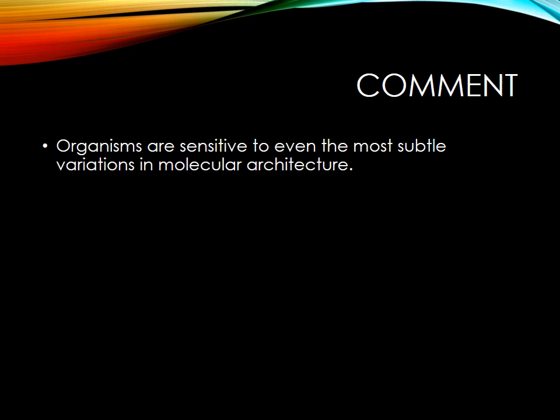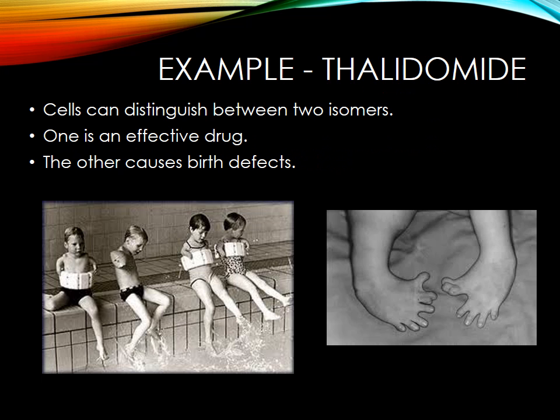Organisms are very sensitive to changes in molecular structure — form dictates function. For example, L-DOPA is a drug that's very effective against Parkinson's disease. But D-DOPA, its enantiomer, is ineffective and has no treatment value. So chemists must be careful to make the right enantiomer. Another powerful example is thalidomide, a drug used during pregnancy in the 1950s and 1960s to help reduce morning sickness. One enantiomer is an effective drug, and the other causes massive birth defects. The images shown are examples of those birth defects in children of women who received the wrong enantiomer of thalidomide.